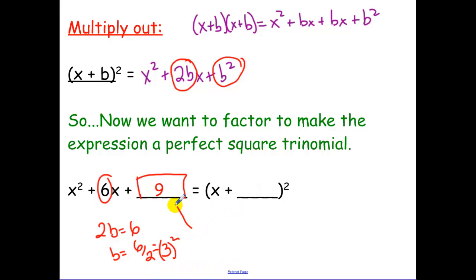So that number is 9. So what goes there is (b/2)². So then when I factor that, we get (x + 3)². It's basically what b/2 is, what this middle term 6 over 2 is.